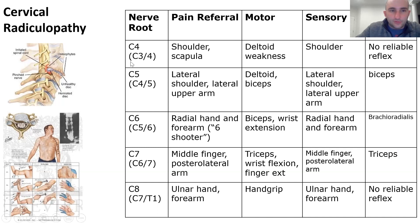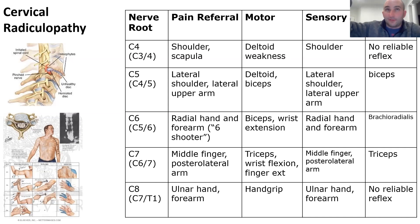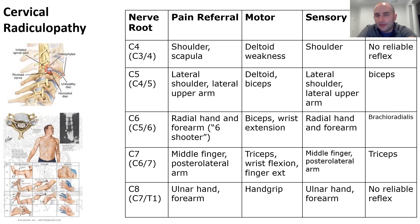For cervical discs — C3-4, C4-5, C5-6, C6-7, C7-T1 — the nerve exits above the pedicle. So at a C3-4 disc herniation, you affect the C4 nerve because C3 has already exited above the disc. C3-4 affects the shoulder region; C4-5 affects the deltoid and biceps (classic C5); C5-6 causes C6 radiculopathy — 'the 6 shooter' pointing to the hand; C7 causes posterior lateral arm pain and triceps involvement; C7-T1 causes C8 radiculopathy affecting the ulnar aspect of the hand.